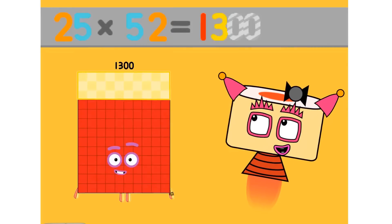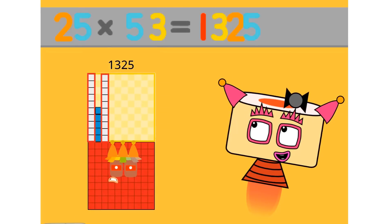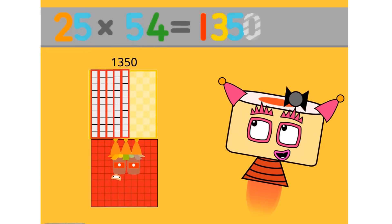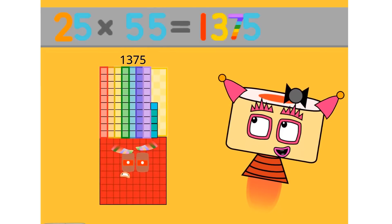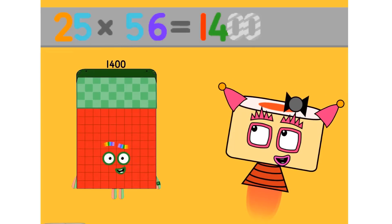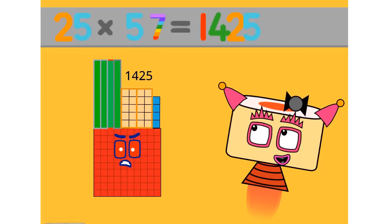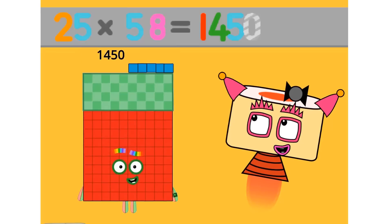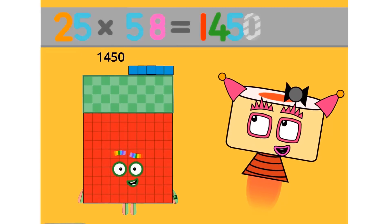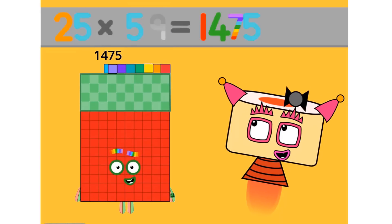25 times 52 equals 1300. 25 times 53 equals 1325. 25 times 54 equals 1350. 25 times 55 equals 1375. 25 times 56 equals 1400. 25 times 57 equals 1425. 25 times 58 equals 1450. 25 times 59 equals 1475.